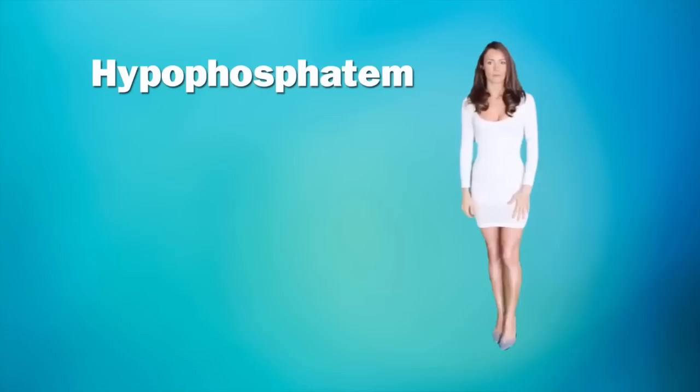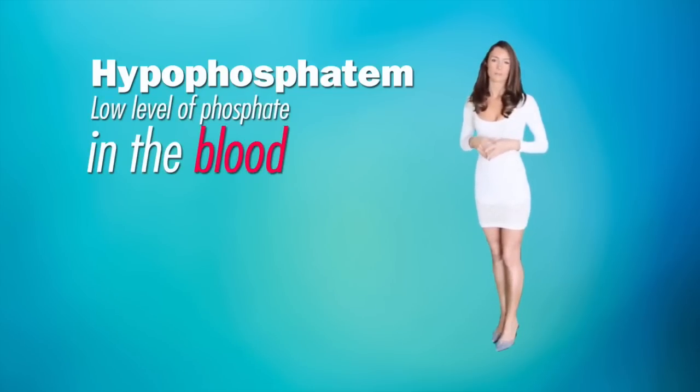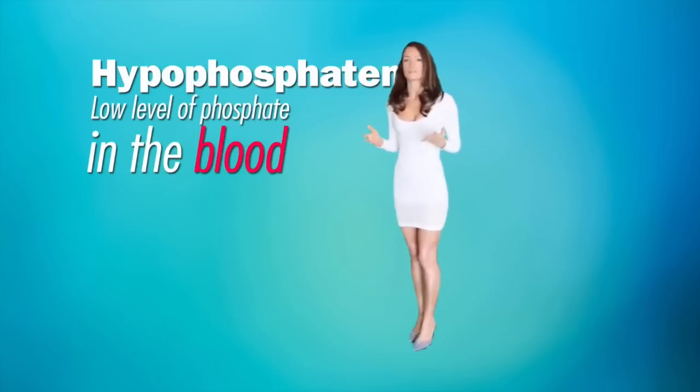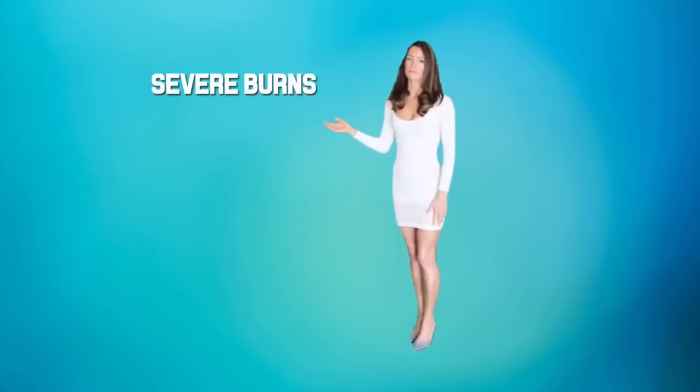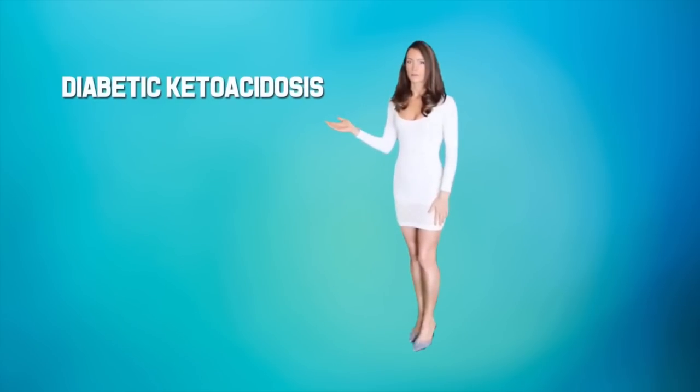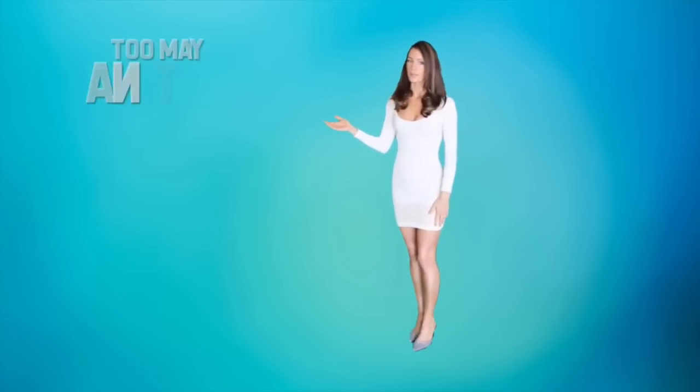Now let's look at imbalances. Hypophosphatemia. This means low levels of phosphate in the blood. Causes. Hypophosphatemia can be caused by malnutrition, malabsorption syndrome, alcohol abuse, severe burns, diabetic ketoacidosis, and too many antacids.